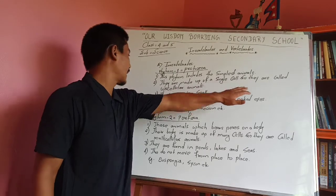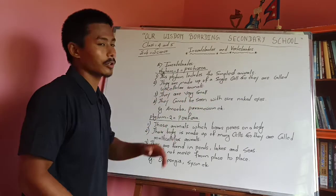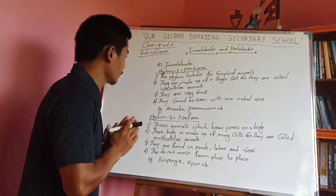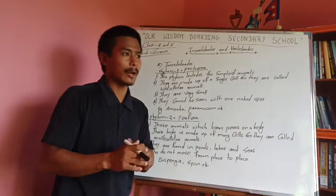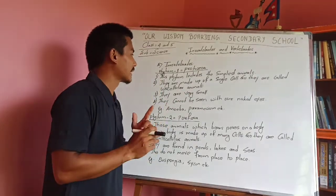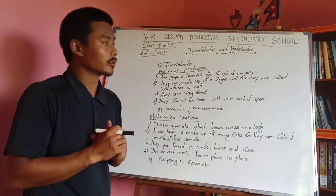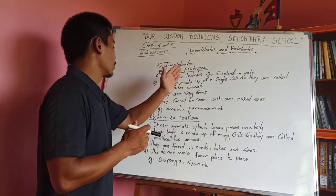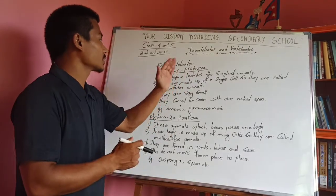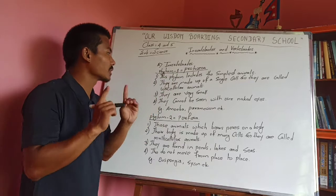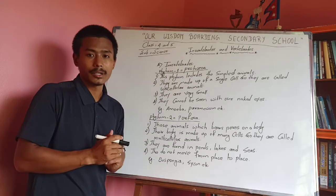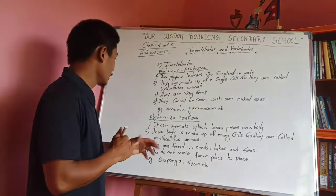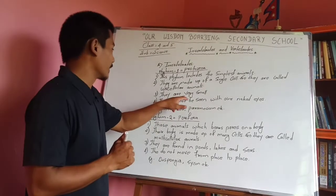These are called unicellular animals. Phylum Protozoa — these animals are made up of a single cell. They are unicellular animals.